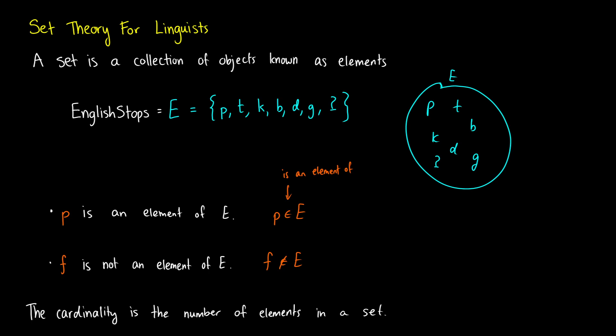If we know how many elements are in our set, then we can count them using what's called the cardinality. The cardinality tells us how many things are in our set. We put little bars around it, and we'd say that the cardinality of E, which is our English stops, would be seven in this case, because we have seven distinct elements.